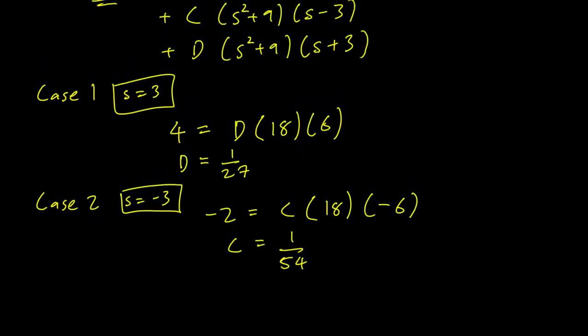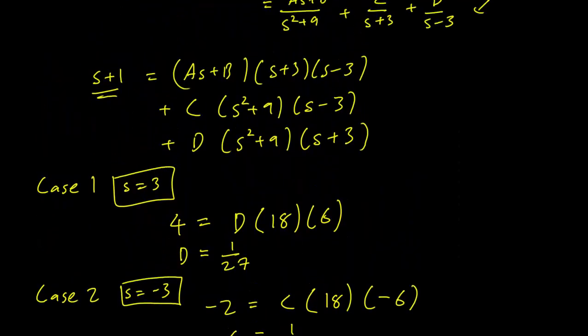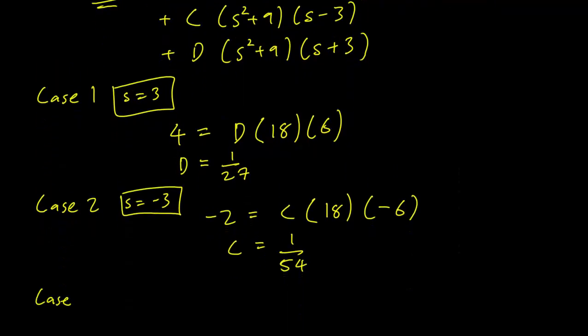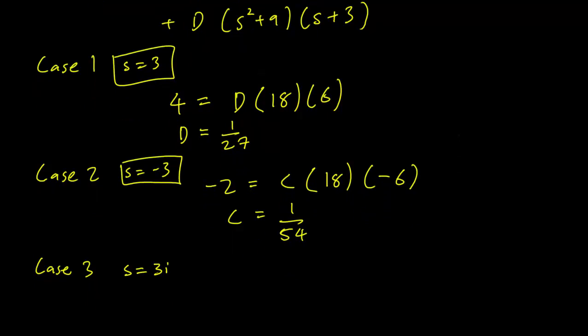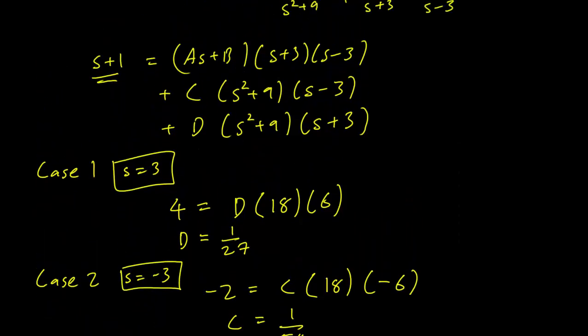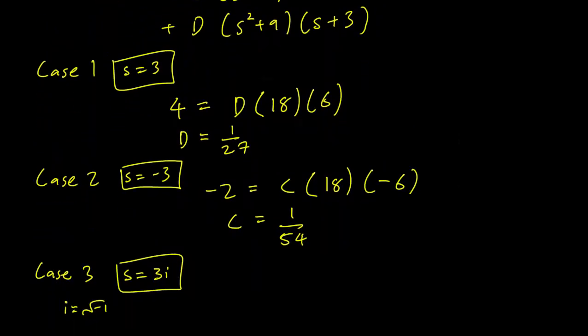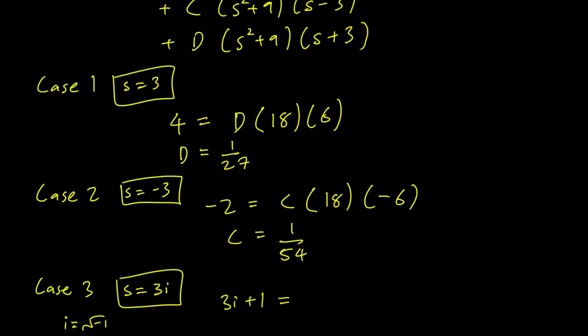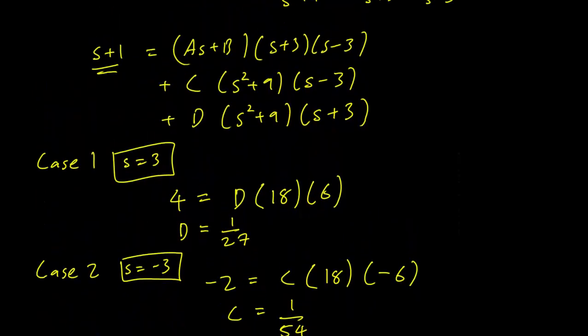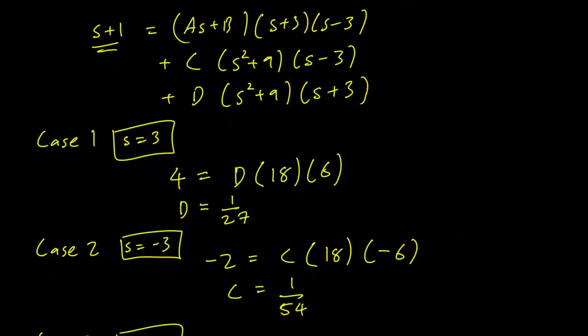So the last term is the more interesting one. We need to figure out a way to get s squared plus 9 equal to 0. So we need our third case to be s equals 3 times i. So i is the square root of negative 1, as you may recall. And when we plug that in, with the left-hand side, we just get 3i plus 1, because s plus 1 on the left-hand side. And on the right, every term cancels except for the first term.